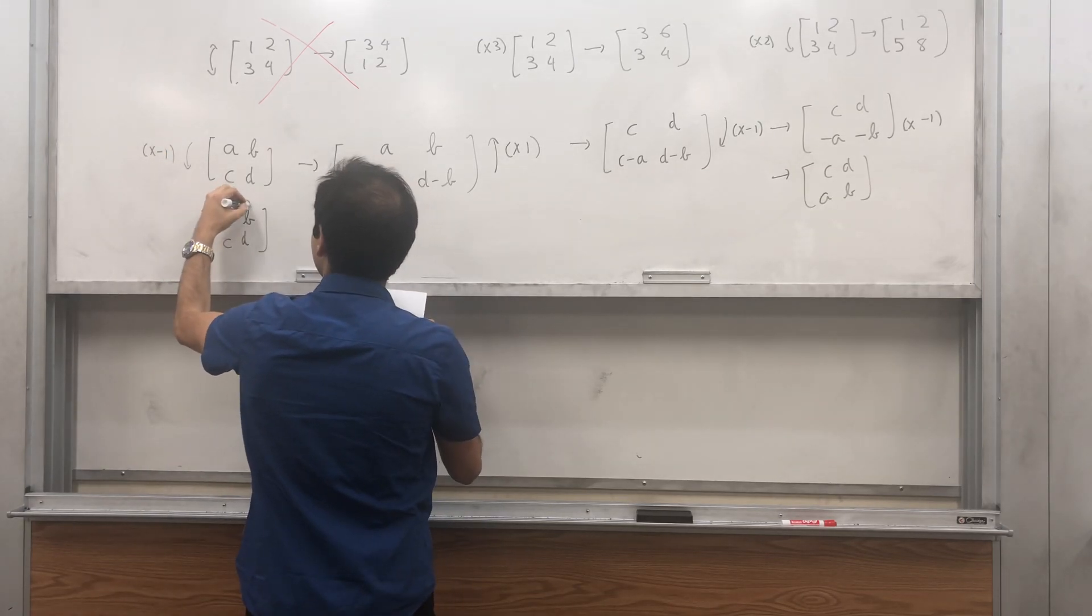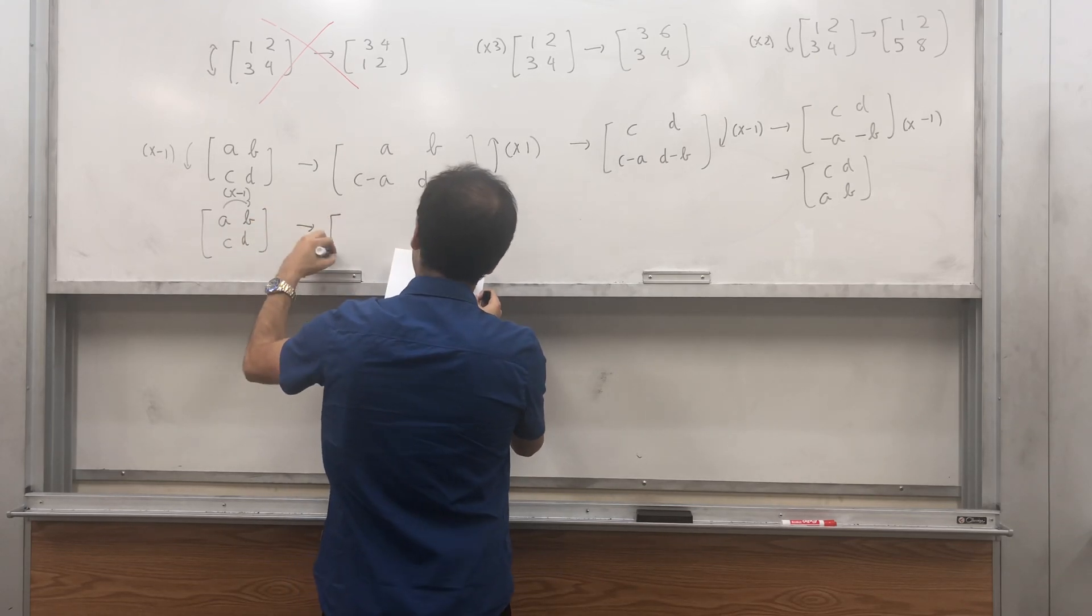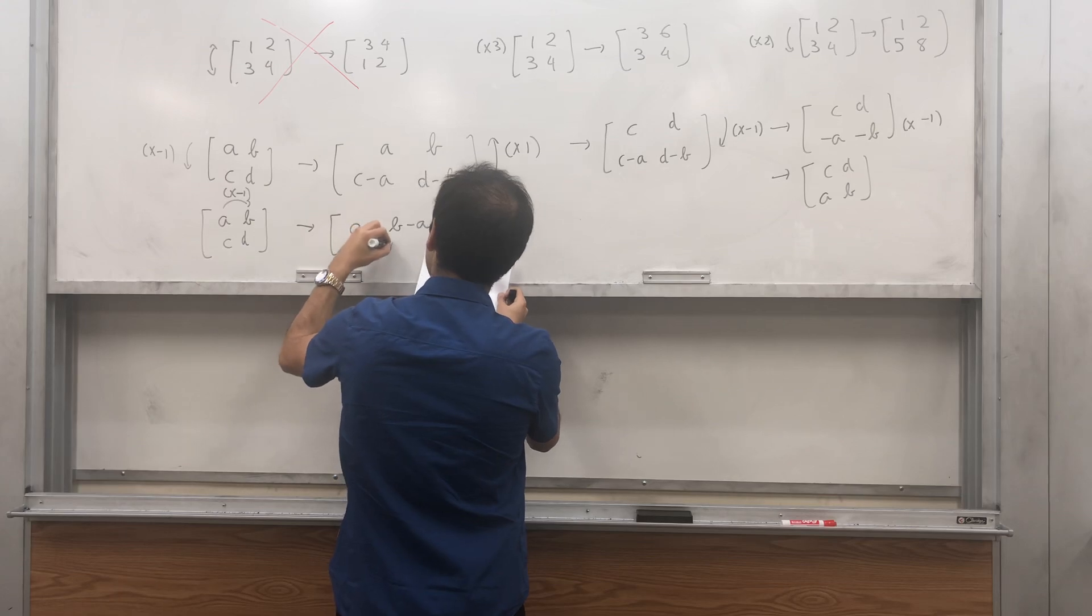And it's entirely analogous. So suppose you start with ABCD, and you want something BADC. Then, now you subtract the first column from the second one to get A, B minus A, C, D minus C.